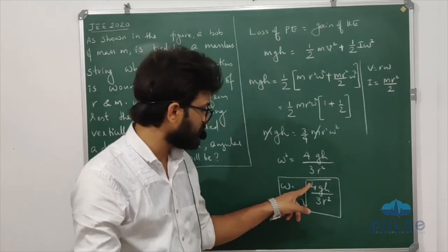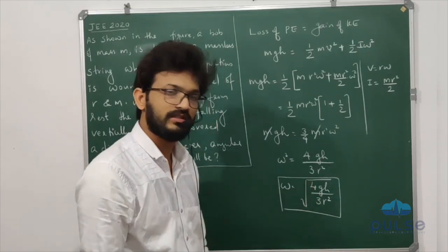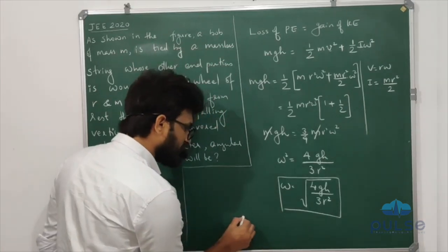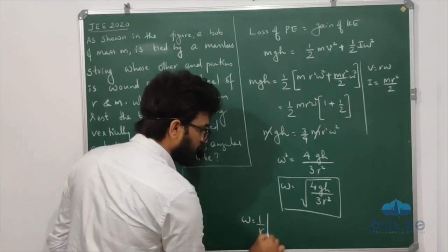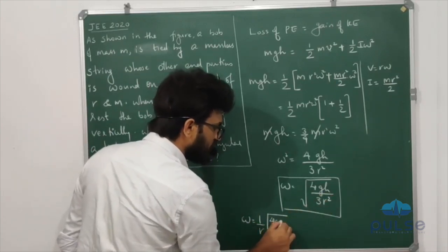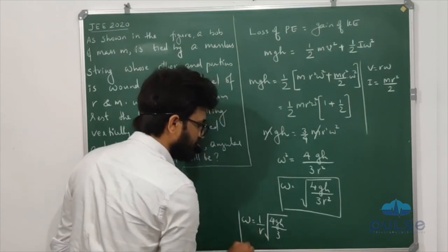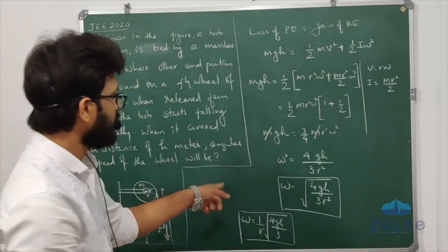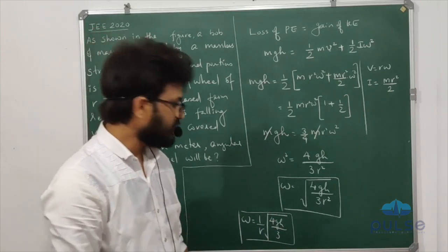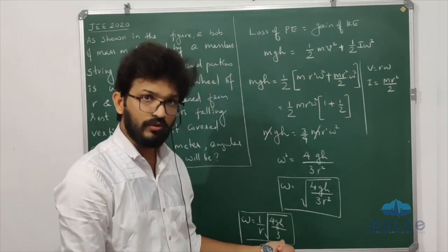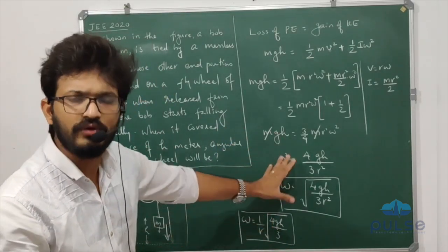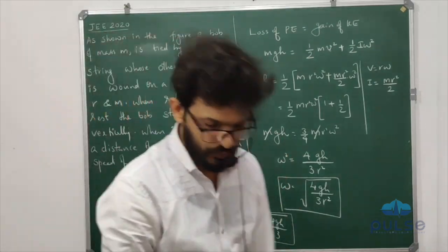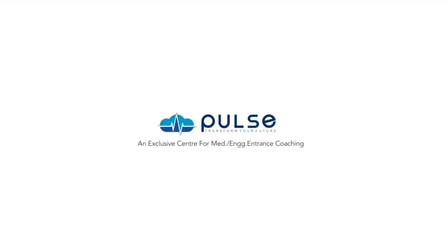The final answer is omega equals (1/R) times the square root of 4gh divided by 3. This is a rotational motion problem in the simple category. Thank you, see you later.